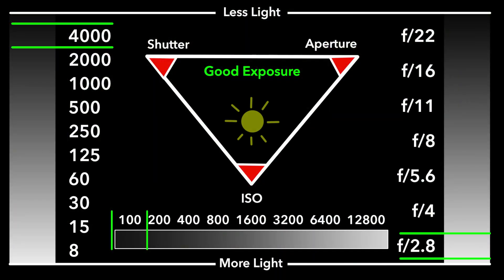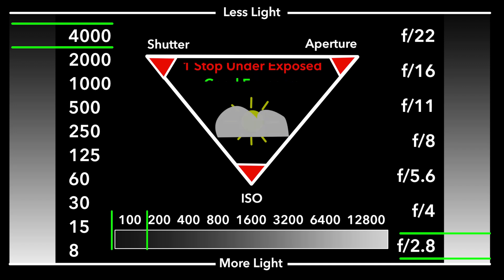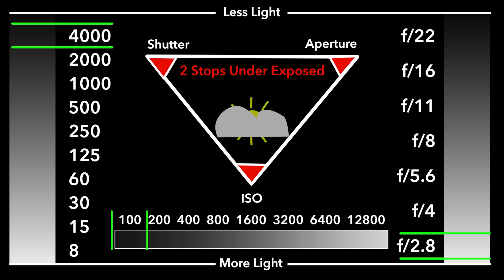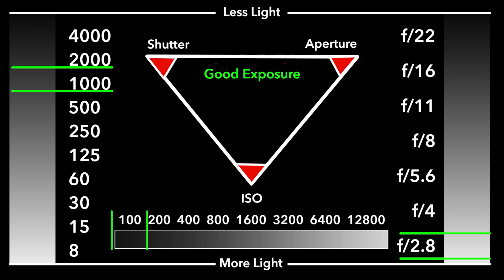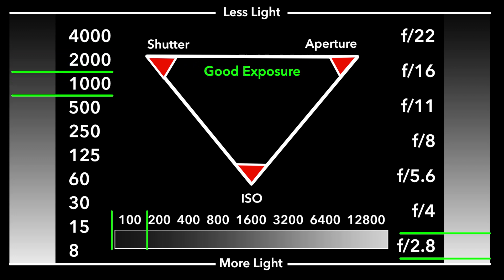Now let's say the clouds come out and block the light — two stops less light. Our shutter wouldn't be at 4000 anymore; it would drop to 2000 — that's one stop — then 1000 — that's two stops. Because the light changed, our shutter speed has to change.